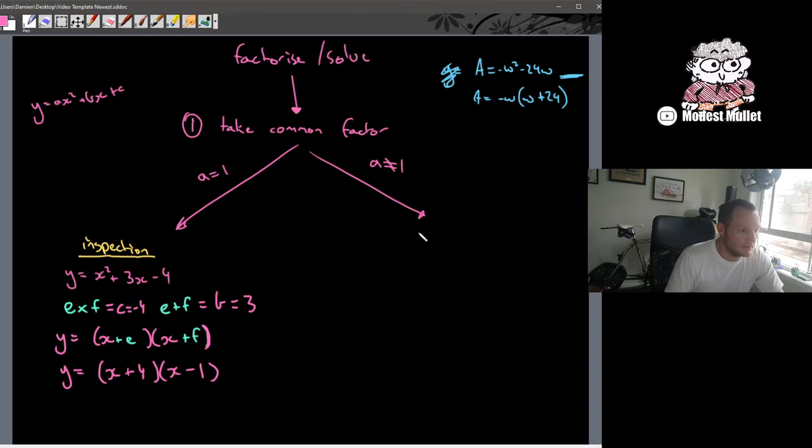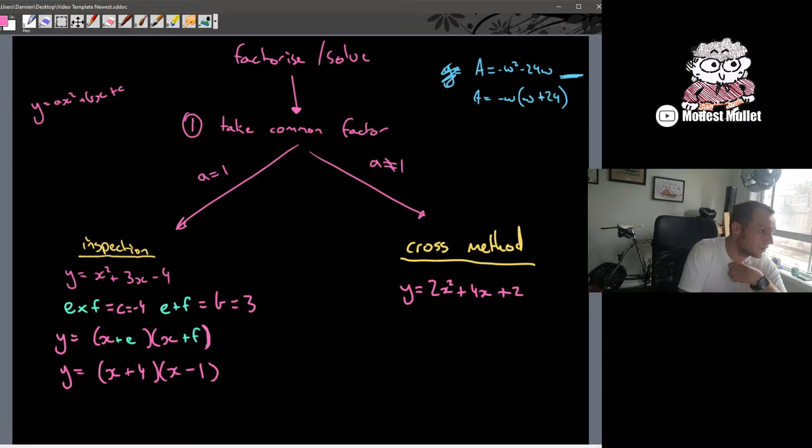What is the first method that we should try if a is not equal to 1? Well in that case we want to use the cross method. That'll be the first thing you try and use. So an example y equals 2x squared plus 4x plus 2. Cross method because we have a coefficient other than 1 in front of the x squared. We first try the cross method.